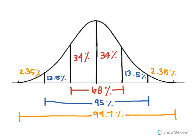One standard deviation to each side of the mean value holds 68% of the data. Two standard deviations to each side of the mean value holds 95% of the data. Three standard deviations to each side of the mean value holds 99.7% of the data.